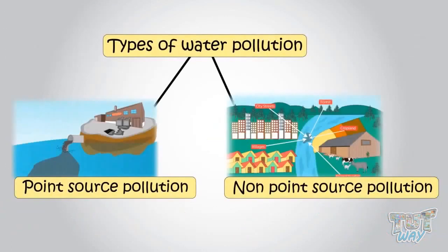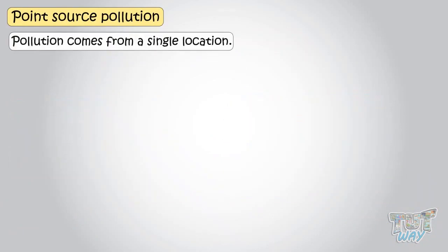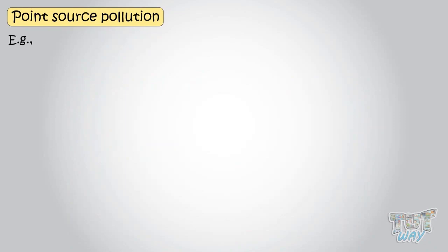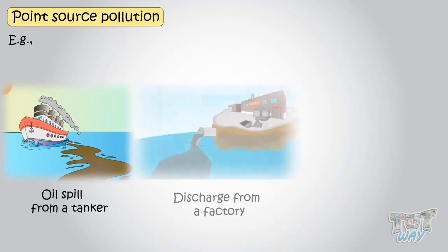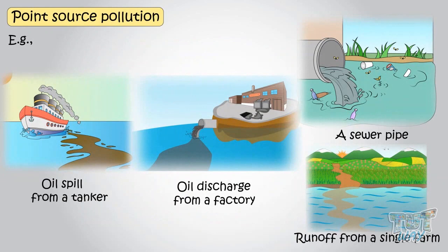Now let's learn types of water pollution. If pollution comes from a single location, such as a discharge pipe attached to a factory, it is known as point source pollution. Other examples of point source pollution include an oil spill from a tanker, discharge from a factory, a sewer pipe, runoff from a single farm. So these are point source pollution occurring from a single location.